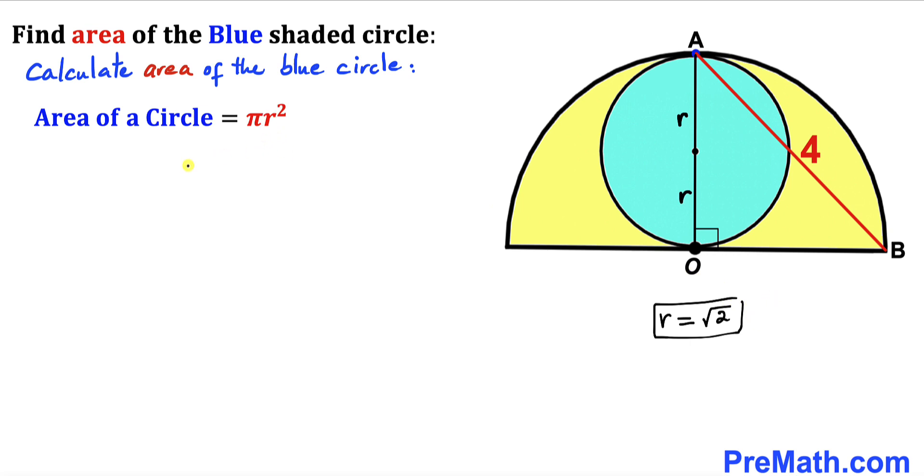So let's go ahead and fill in the blanks. So the area of this blue circle is going to be π times (√2)².